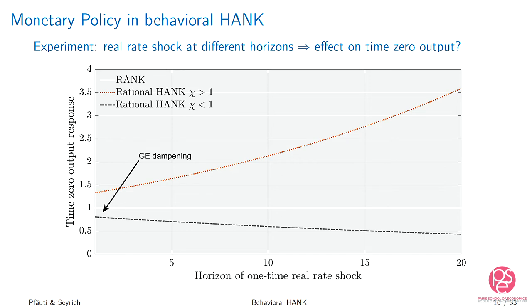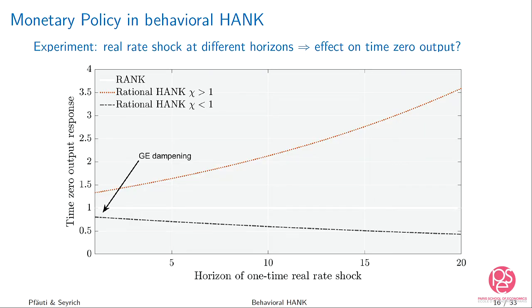Q: Whatever you're saying here also holds for a RANK model — if I put the Gabaix assumption into a RANK model, I would get the same result. A: In the behavioral RANK model you get the resolution of the forward guidance puzzle, but you would not get the GE amplification — no indirect effects through high-MPC households being more exposed. This is why it's nice to look at the IS equation: Psi_C determines the GE amplification and Psi_F rules out the forward guidance puzzle in the behavioral HANK model.